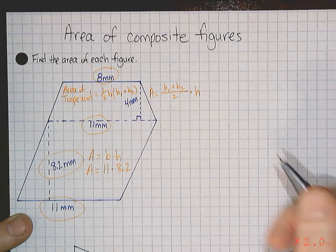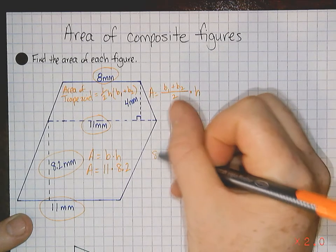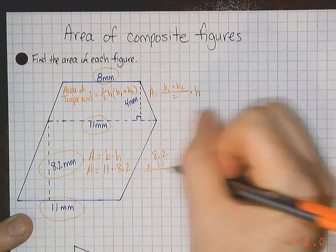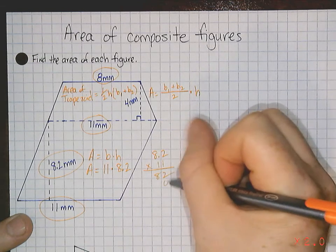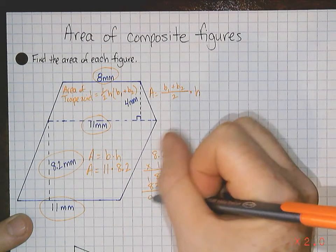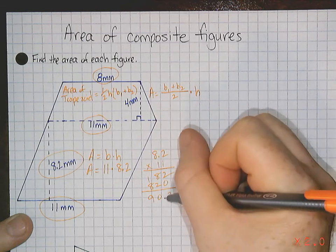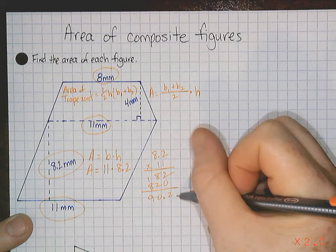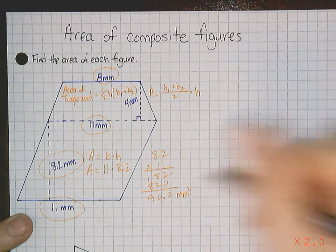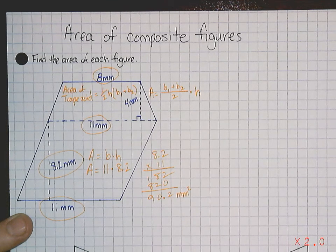So 8.2 times 11, you've got one decimal here, one decimal here, so that's 90.2 millimeters squared. That's just for the parallelogram.